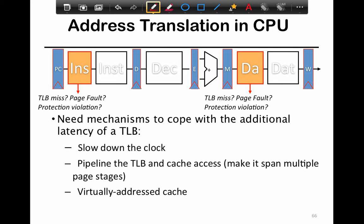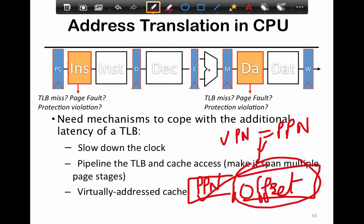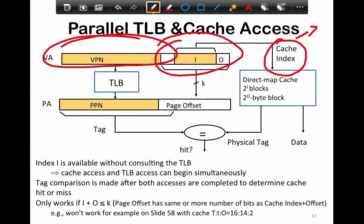Another option - commonly used today - is to make the cache virtually indexed. You take the offset part of your address: your address has an offset and a physical page number, and this offset is the same for both the VPN and the PPN. So you just use this offset part to index into the cache. This allows you to do a parallel access where the cache index comes from the offset part, and you don't need to do the translation because the offset is the same across both VPN and PPN.